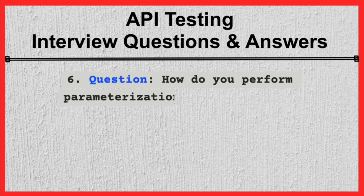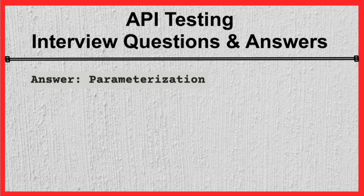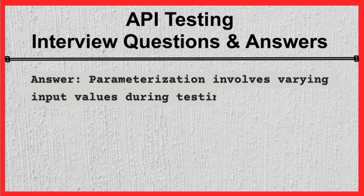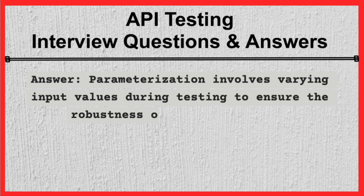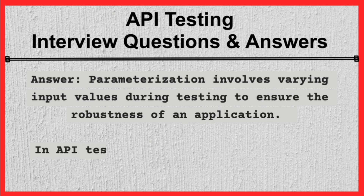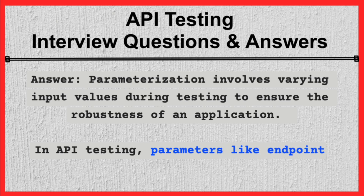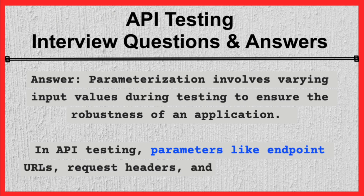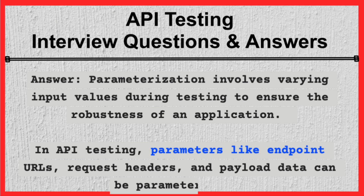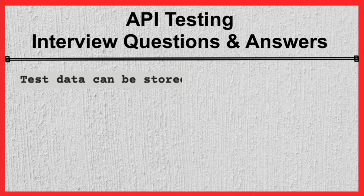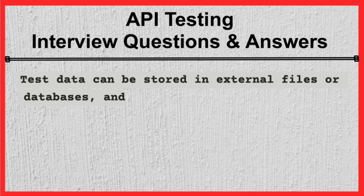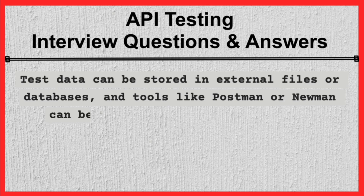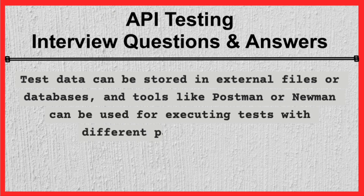Question 6. How do you perform parameterization in API testing? Answer. Parameterization involves varying input values during testing to ensure the robustness of an application. In API testing, parameters like endpoint URLs, request headers, and payload data can be parameterized. Test data can be stored in external files or databases, and tools like Postman or Newman can be used for executing tests with different parameter values.